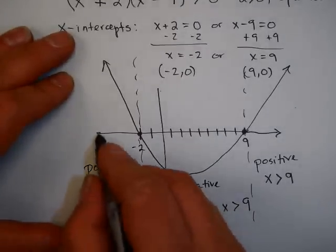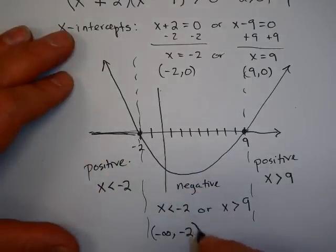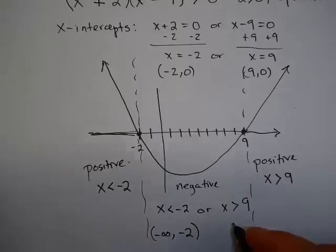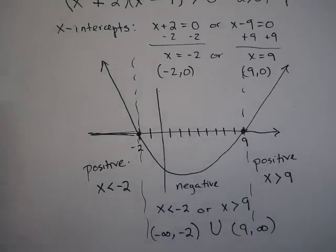So I could write this: x is less than -2 or x is greater than 9. Or in interval notation, less than negative 2, remember, is negative infinity to negative 2. And greater than 9 is 9 to infinity. You can put this little union sign in there to mean or.